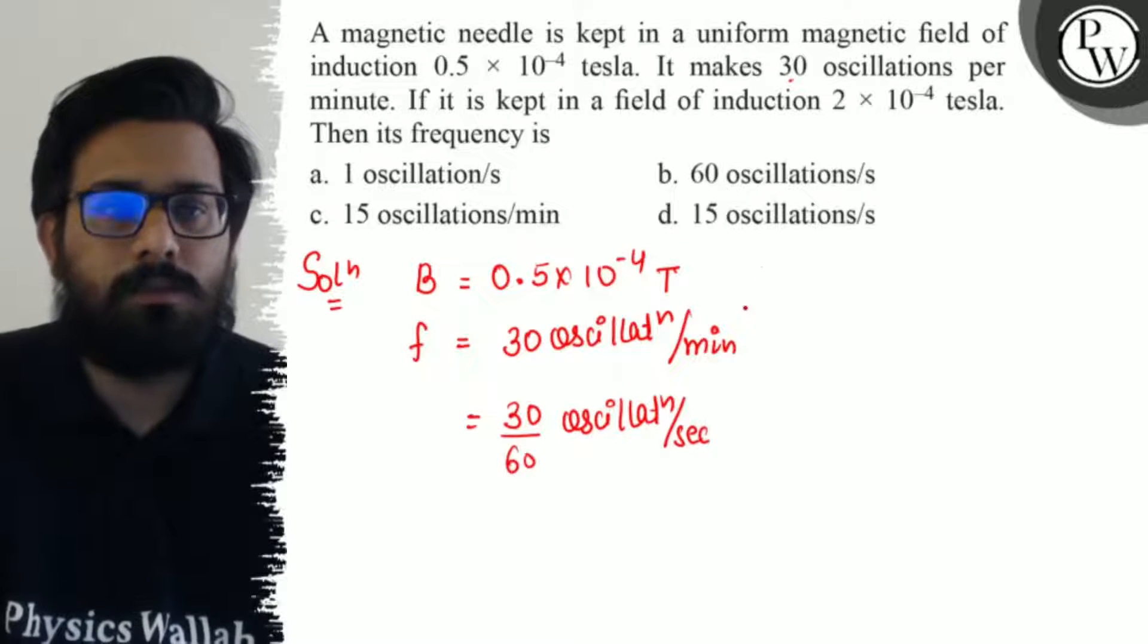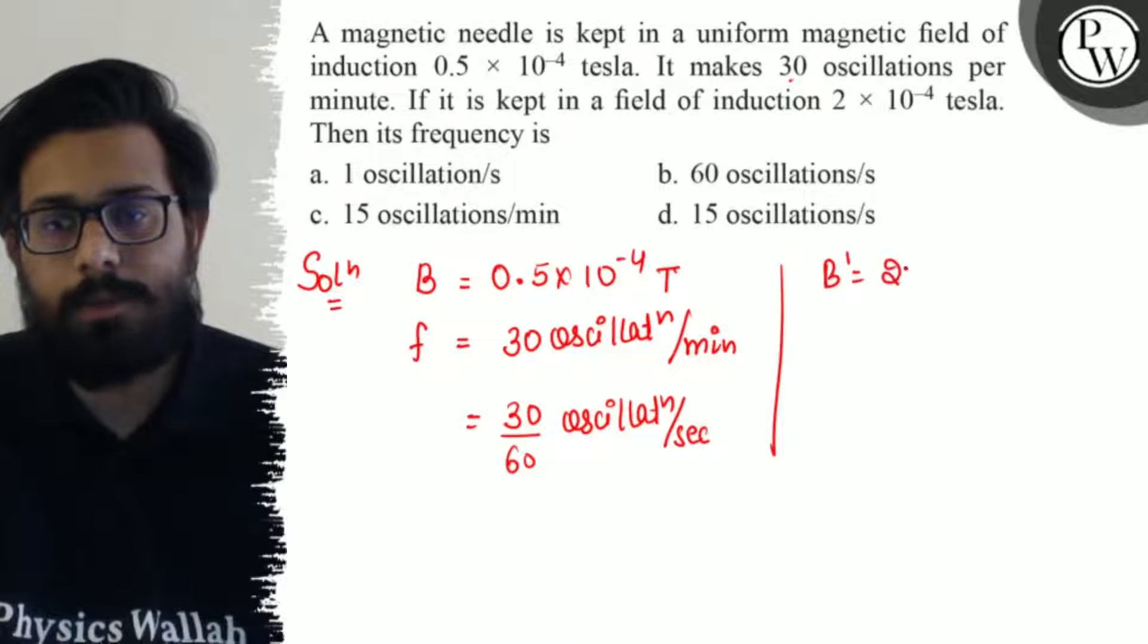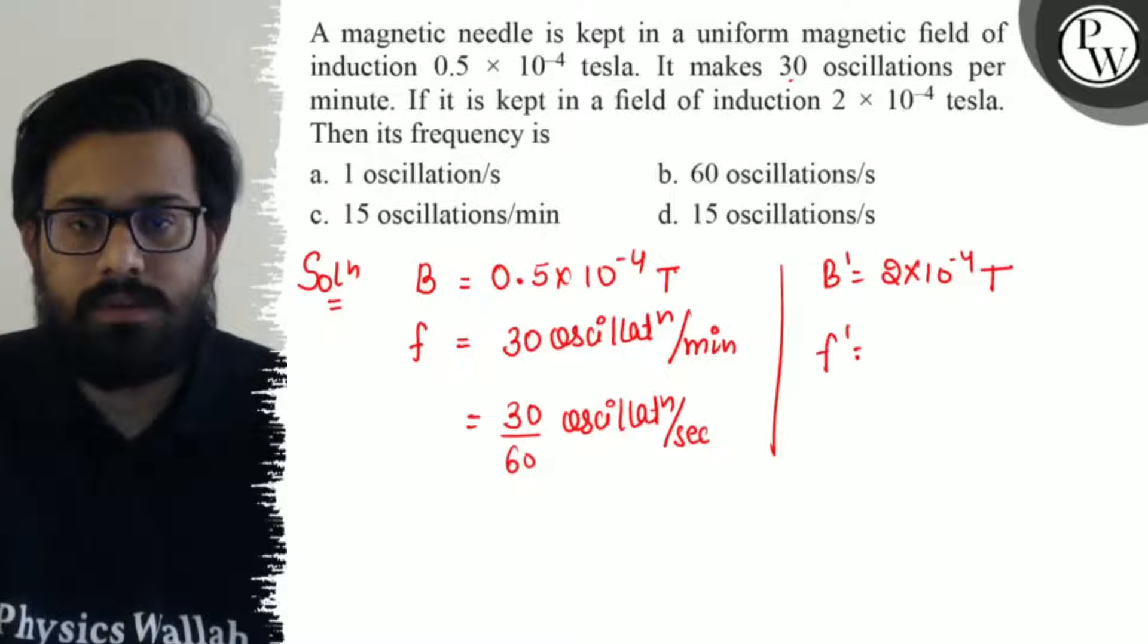Now if we have the magnetic field as B' = 2 × 10⁻⁴ tesla, what will be the new frequency?